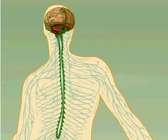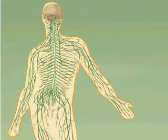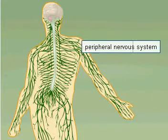The central nervous system plays a major role in the organism because it controls the activity of other organs. This is achieved by means of the peripheral nervous system.